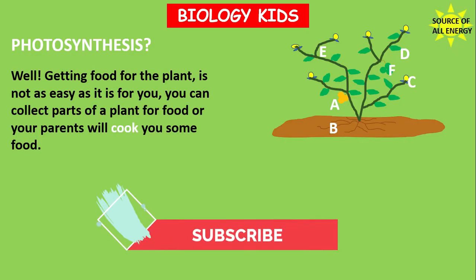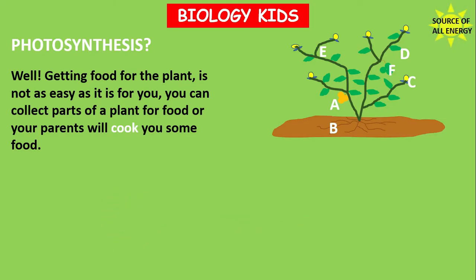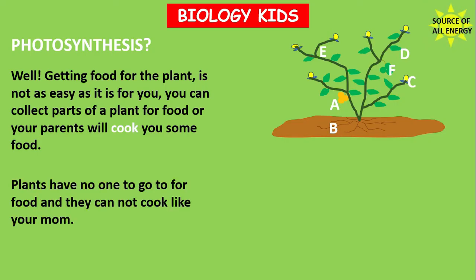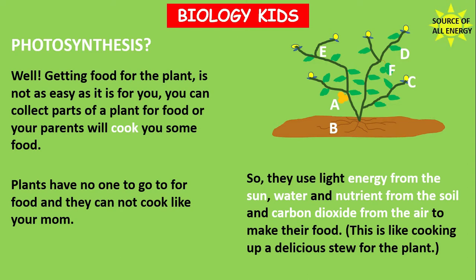Let us look a little closer at the plant. Getting food for the plant is not as easy as it is for you. You can collect parts of a plant for food, or your parents will cook you some food. You just go outside and get yourself an orange, a piece of cane, an apple — or your parents might cook you your favorite stew. But plants are not able to do that. Plants have no one to go to for food and they cannot cook like mom. So they use light energy from the sun, water, nutrients from the soil, and carbon dioxide from the air to make their food. This is like cooking up a delicious stew for the plant.